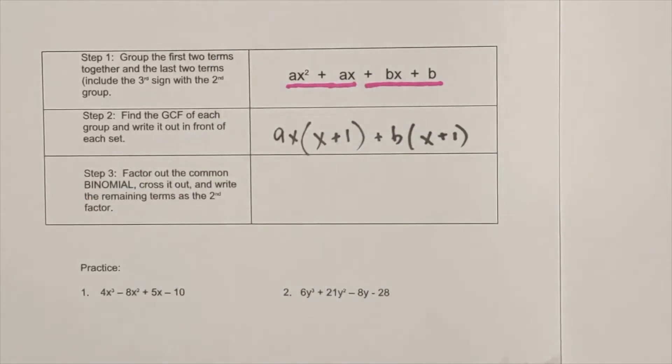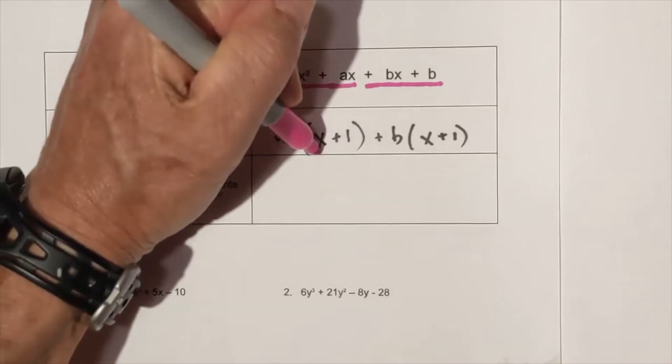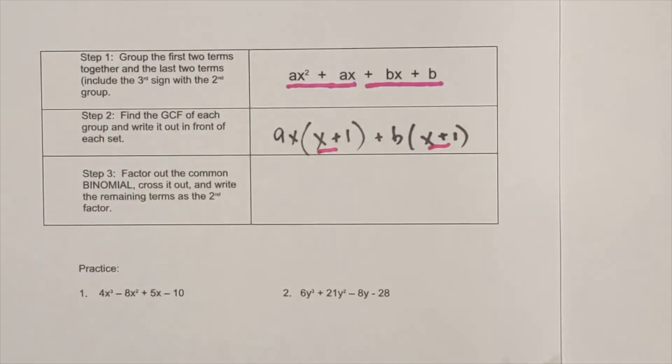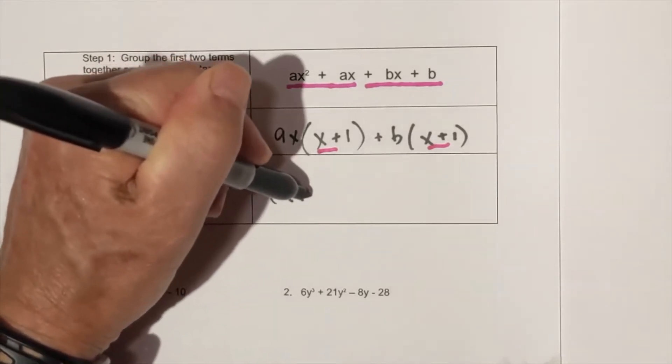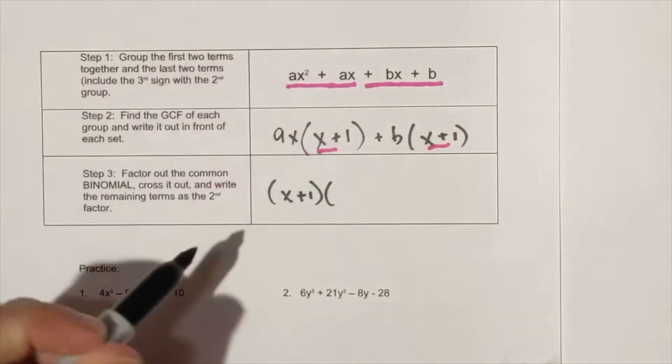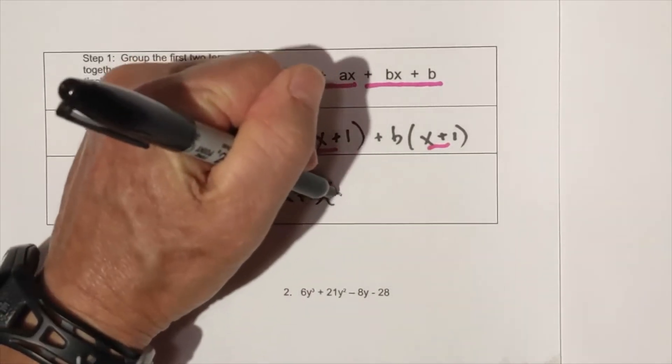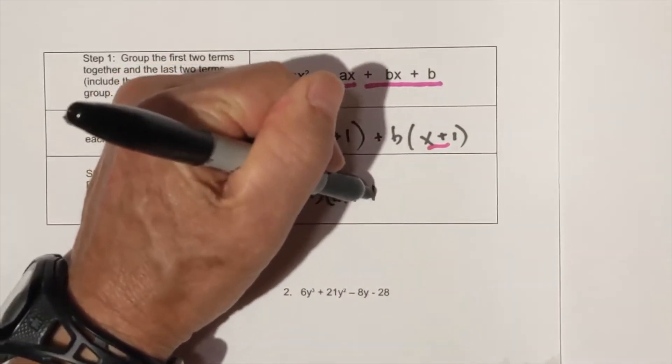So now what we do is we find the two common binomials. Here is one and here's the other. So what we do is we put these common binomials out front, and then in the next grouping is what you have left, and that is ax and the sign goes with the b.